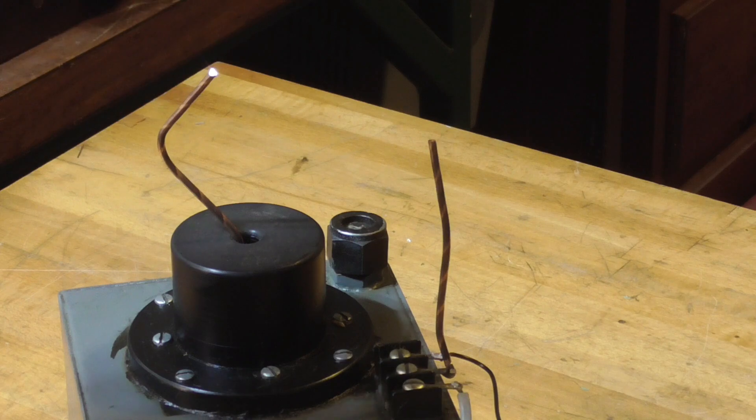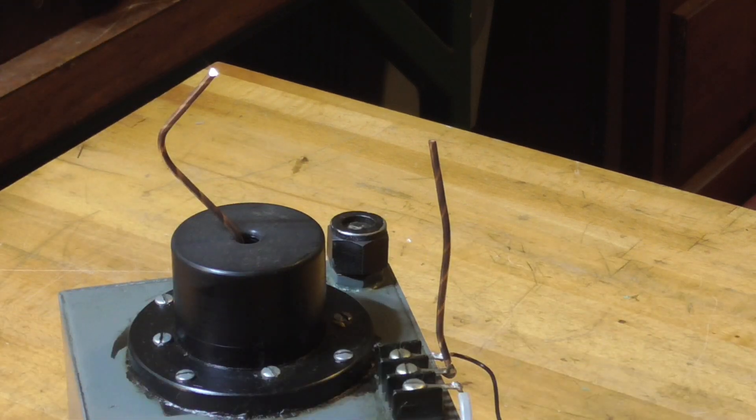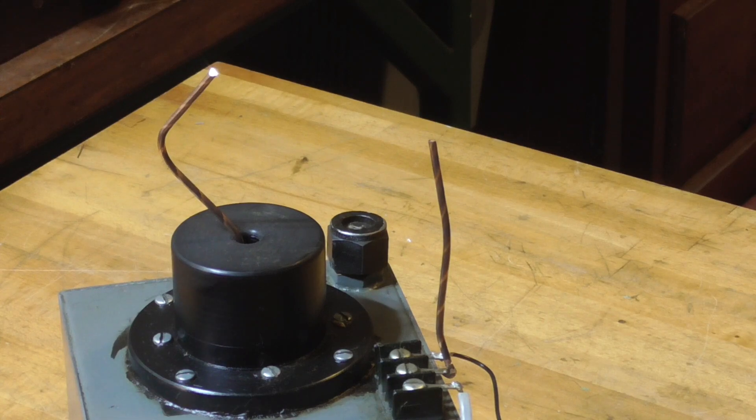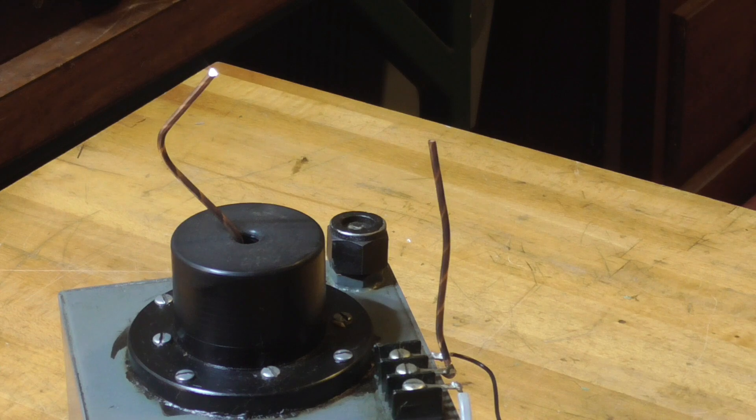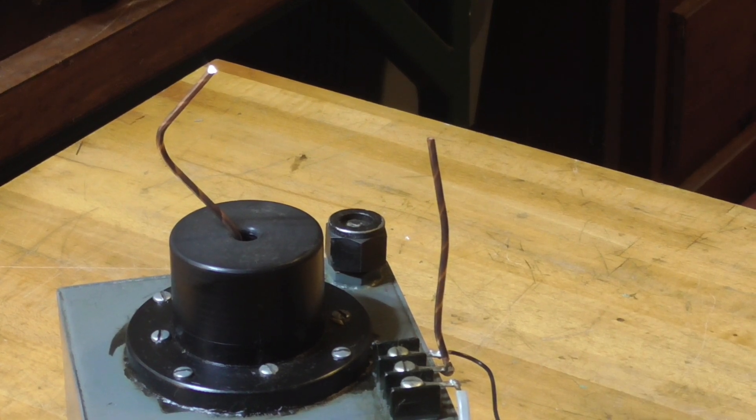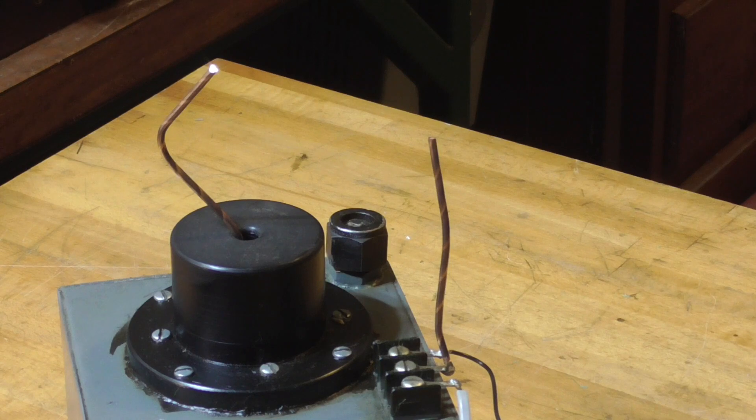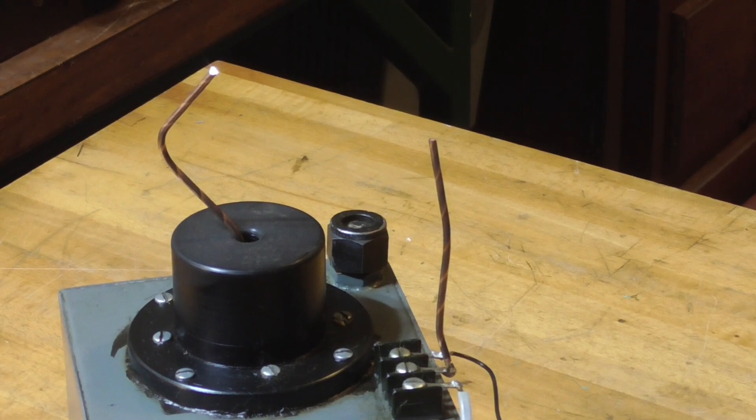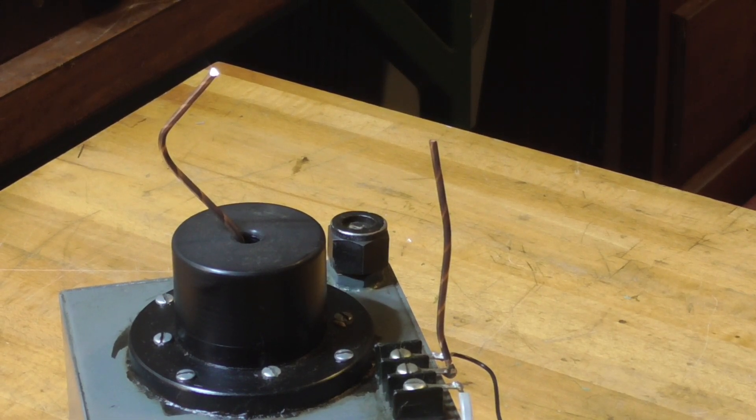But you see, we're not pulling an arc. That's an actual spark jumping three inches there and that's what it takes. Now this is 60 cycles. It's not high frequency stuff. Now what these people are not understanding is that high frequency causes air to ionize at a much lower voltage.